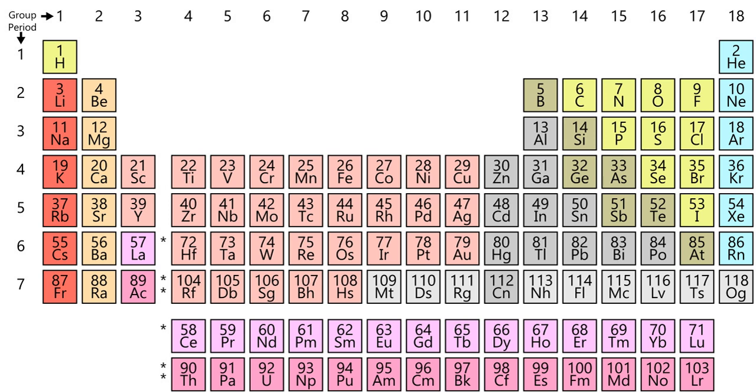The atomic number of an element is equal to the number of protons in each atom, and defines the element. For example, all carbon atoms contain six protons in their atomic nucleus, so the atomic number of carbon is six. Carbon atoms may have different numbers of neutrons; atoms of the same element having different numbers of neutrons are known as isotopes of the element.